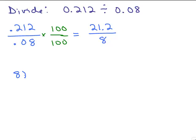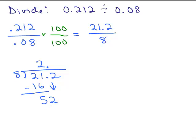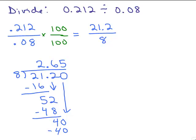We do 8 into 21.2. The decimal goes up into the answer because we're dividing by a whole number. 8 into 21 goes twice. Subtract and bring down the next digit. 8 into 52 goes 6 times; 6 times 8 is 48, subtract. Now I need to add a 0 here so I can bring down another digit. 8 goes into 40 five times, and I'm done with no remainder.